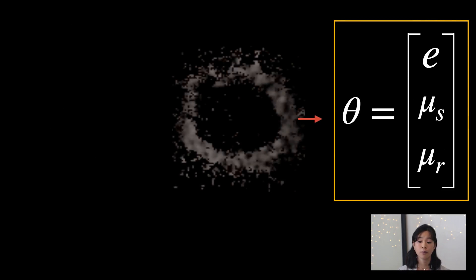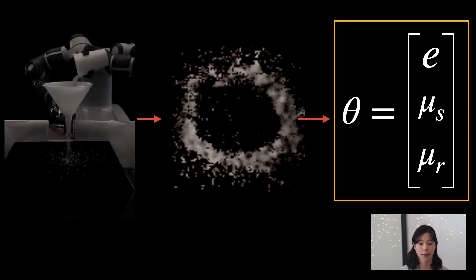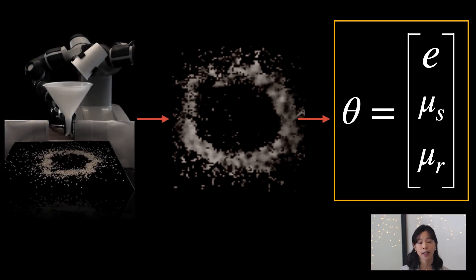The framework thus aims to infer these parameters, which we denote by theta, from a single bird's eye view depth image of the grains at steady state. The particular steady state signal we use is the depth image of the granular formation that is created when the grains are poured through a funnel onto a flat surface.